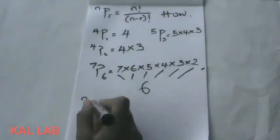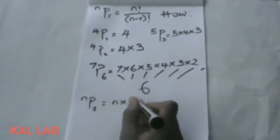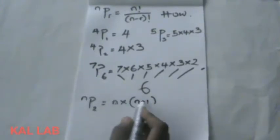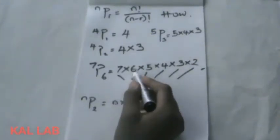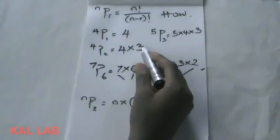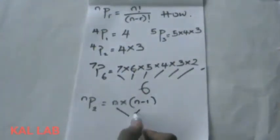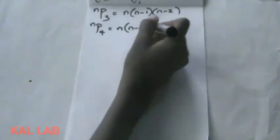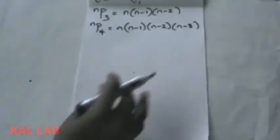So that being said, from all this we can establish the fact that n permutation 2 would be n multiplied by n minus 1. That is the n and n minus 1, as in the 7 and 7 minus 1 gives 6, or 4 and 4 minus 1 gives 3, and the 2 is this 2. You see, n permutation 3 would be n, n minus 1, and n minus 2. And n permutation 4 would be n, n minus 1, n minus 2, and n minus 3. Now there's something about this.